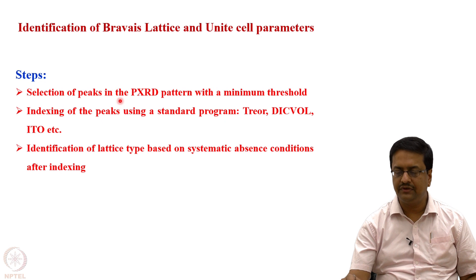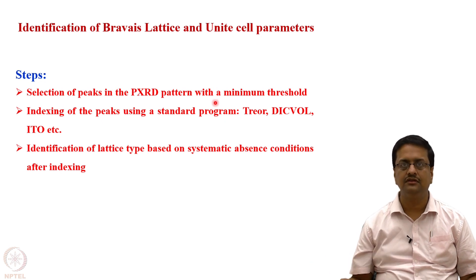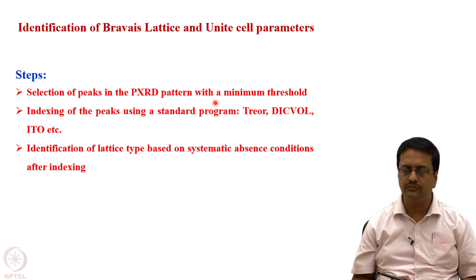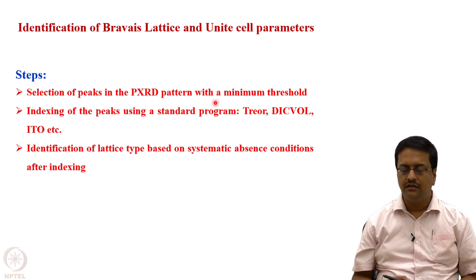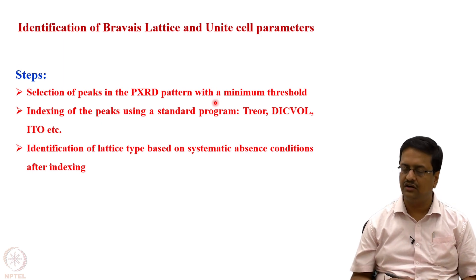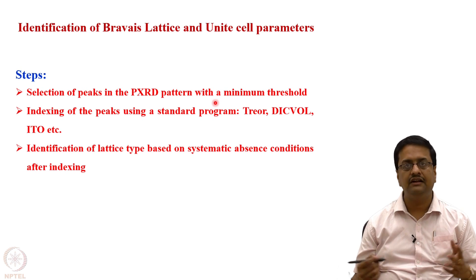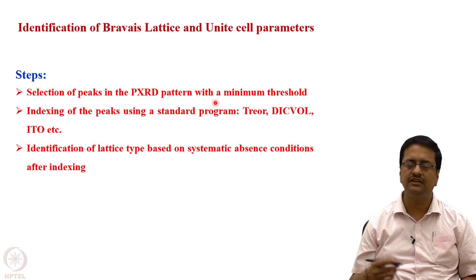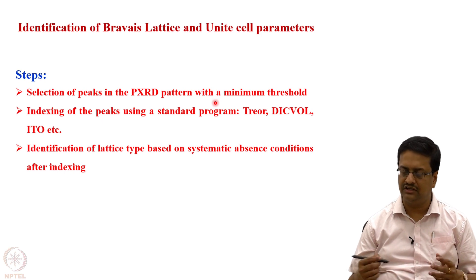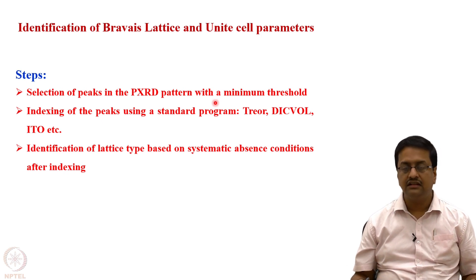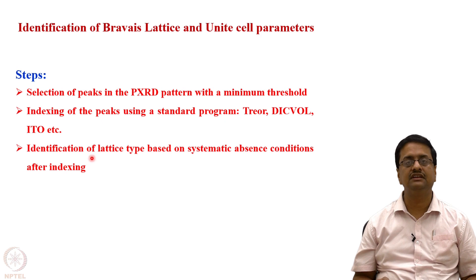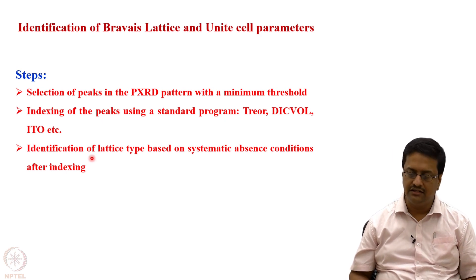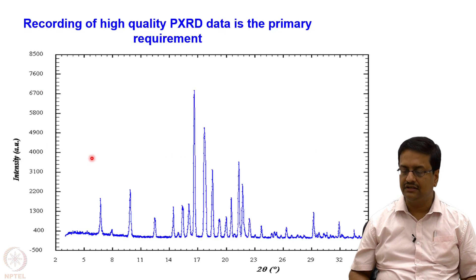We do not want to eliminate any very small peak present in the powder X-ray diffraction pattern. Then we try to index these peaks using standard computer programs such as TREOR, DICVOL, ITO — and nowadays DASH and PDXL also perform indexing of powder diffraction data. Based on the indexing, one can identify the lattice type, and based on systematic absences one can try to get the space group, though that is very difficult.